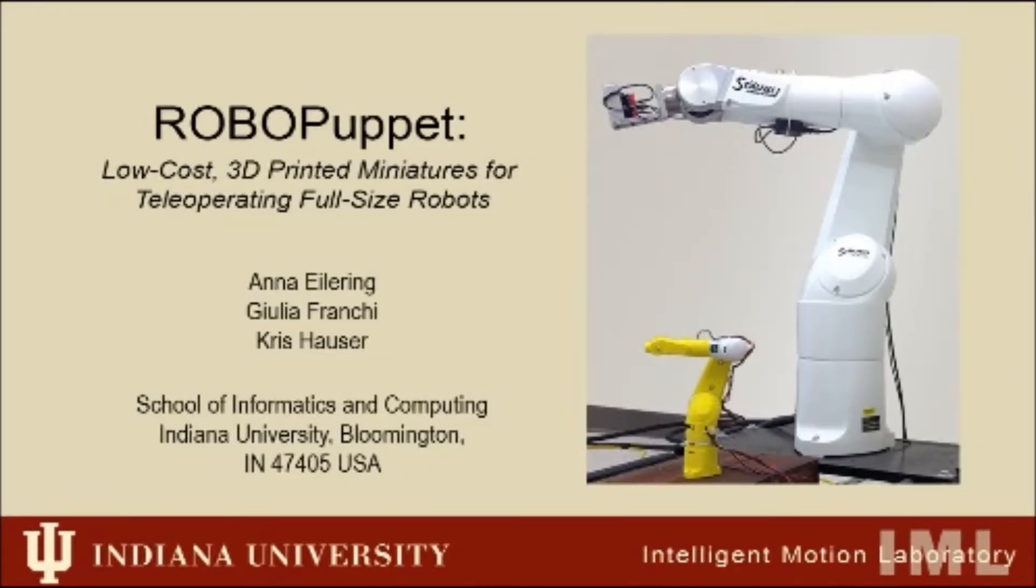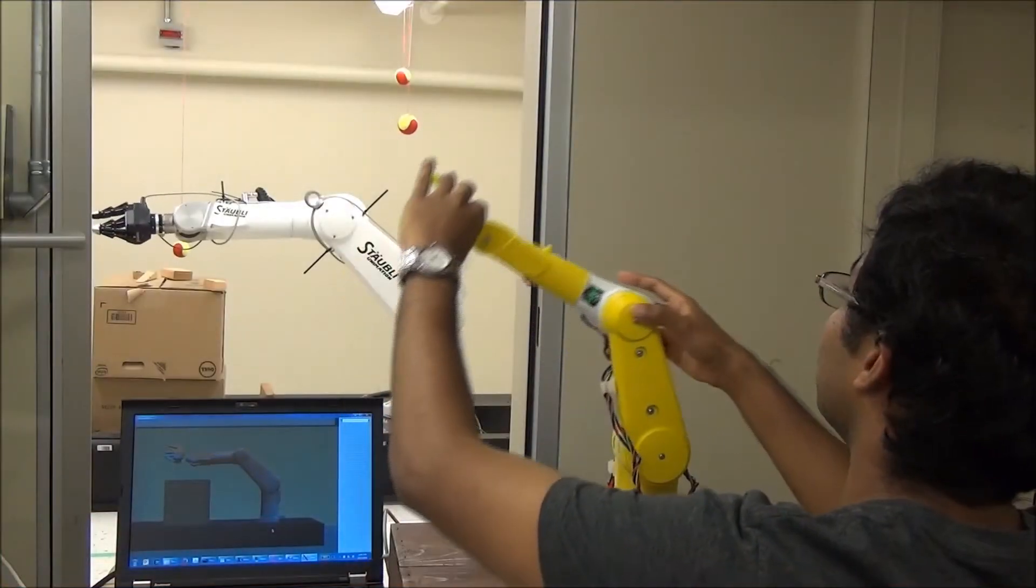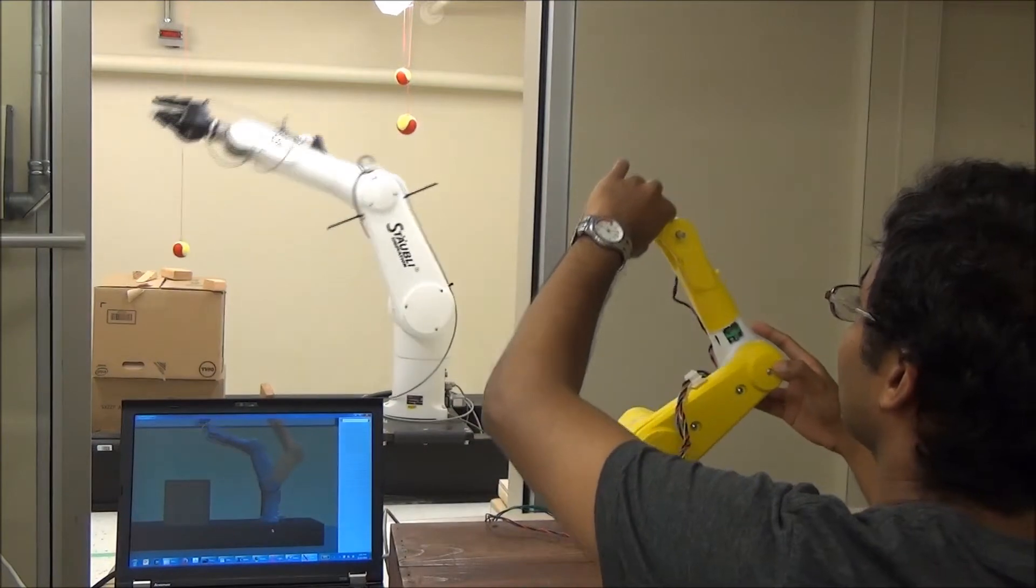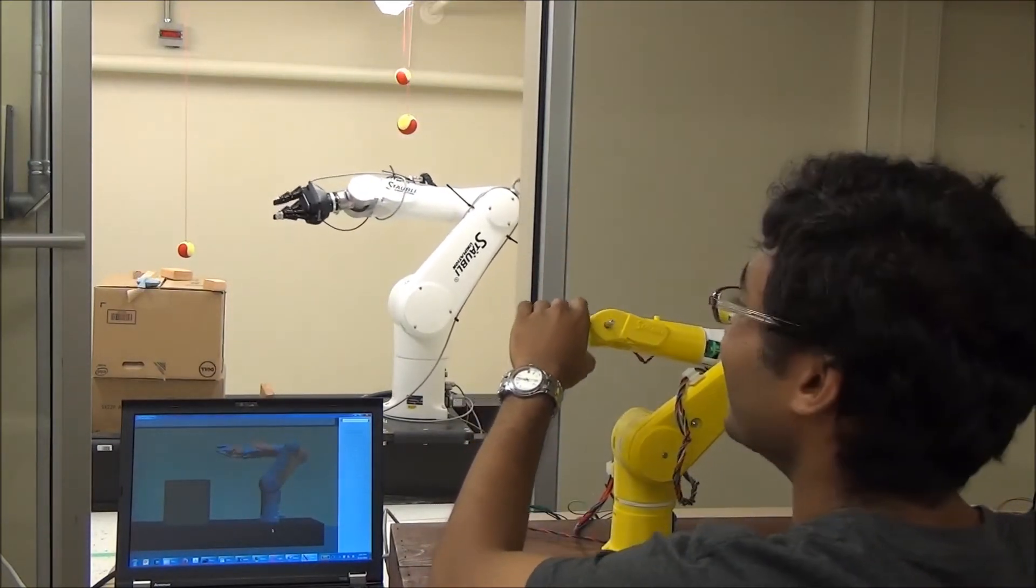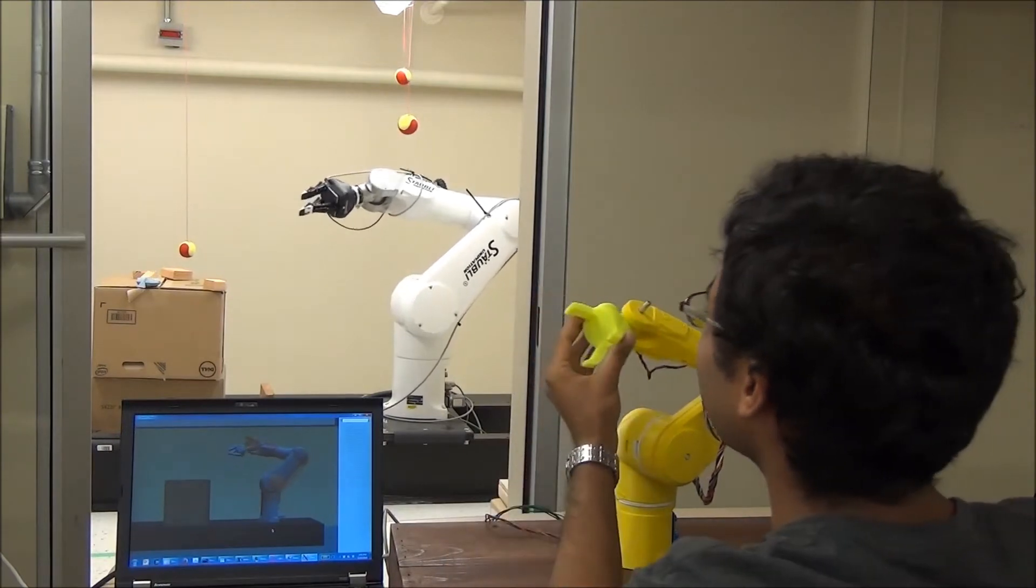This video introduces RoboPuppet, a new technique created in the Intelligent Motion Laboratory at Indiana University for building inexpensive, tabletop-sized models of robots to provide teleoperate input to full-size robots.